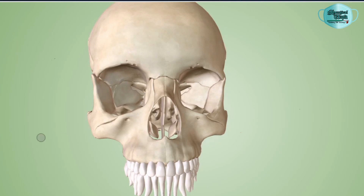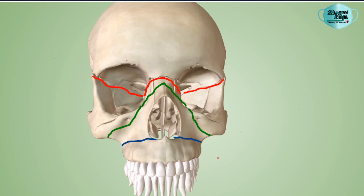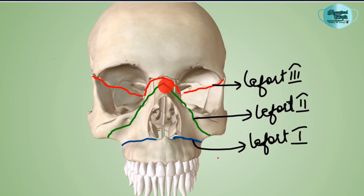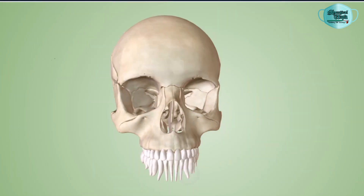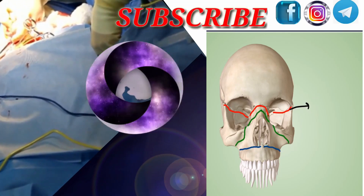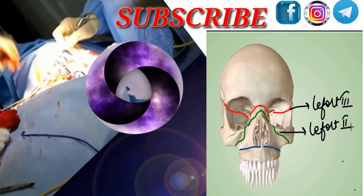This is the Le Fort 3 fracture. From the anterior aspect: the red line is Le Fort 3 bilaterally, green is Le Fort 2 bilaterally, and blue is Le Fort 1. These are our three fracture lines for the midface fractures given by René Le Fort in 1901. In the next video we will discuss the classification of midface fractures.